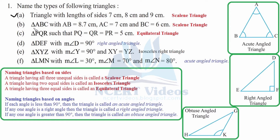Part b: Triangle ABC with AB, AC equal to 7, and BC equal to 6 centimeter. Again, the sides are not equal, therefore it is a scalene triangle.